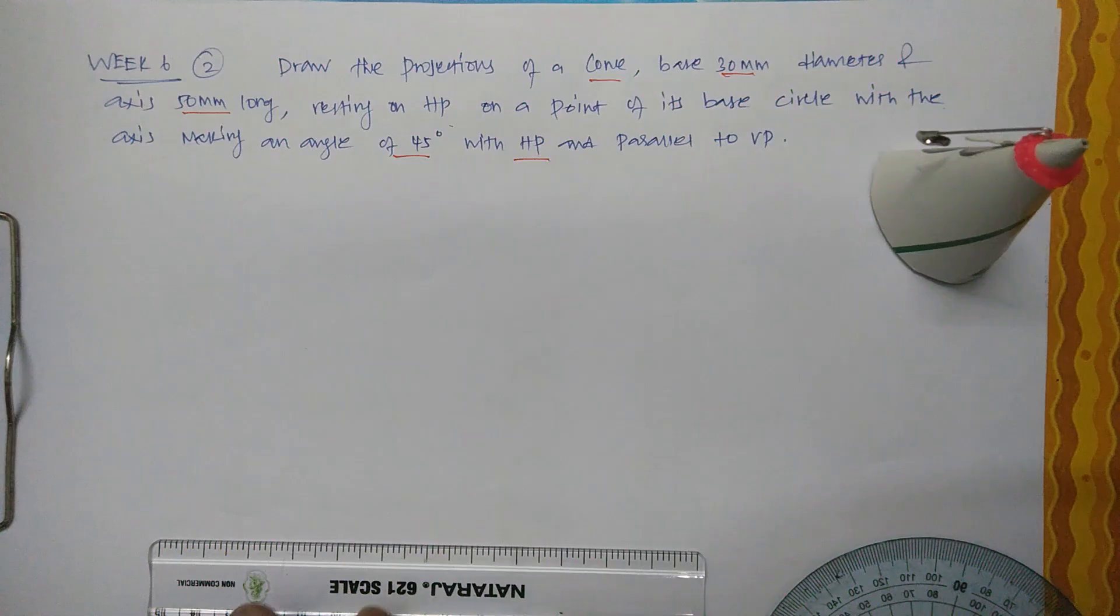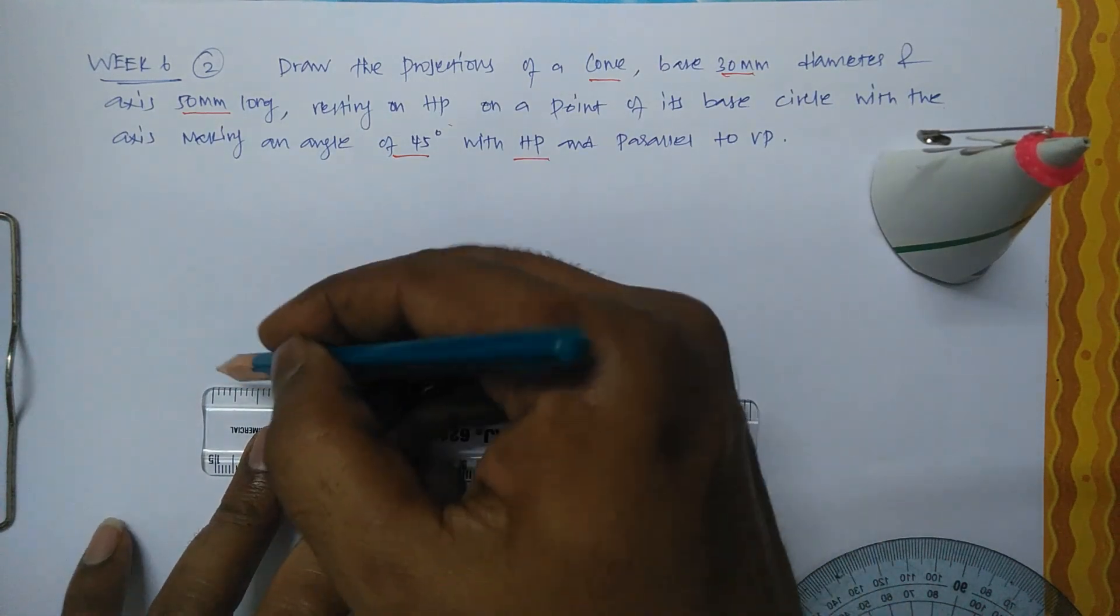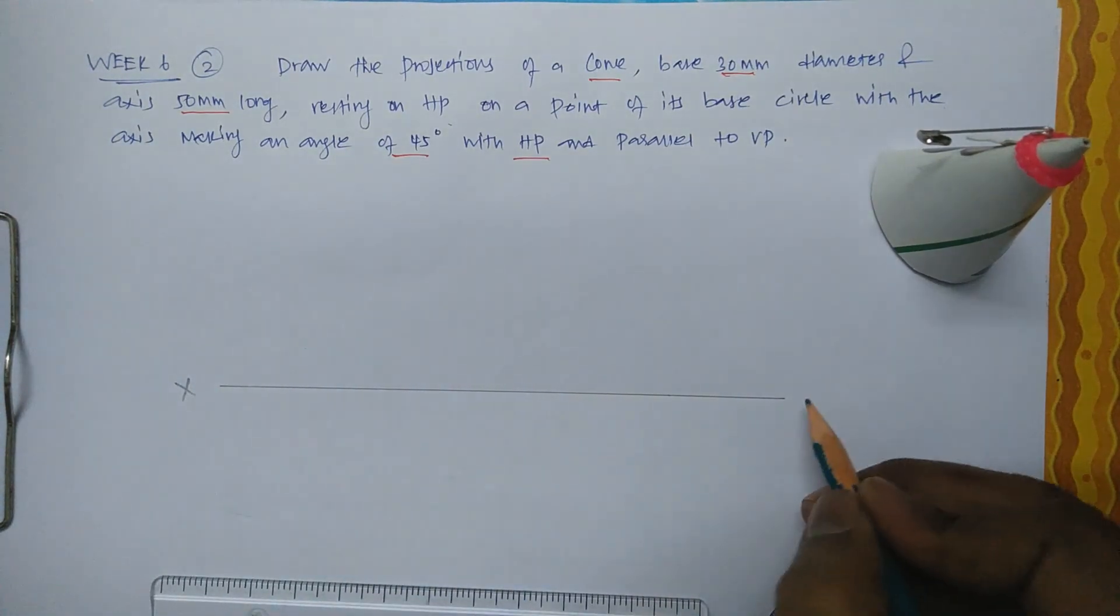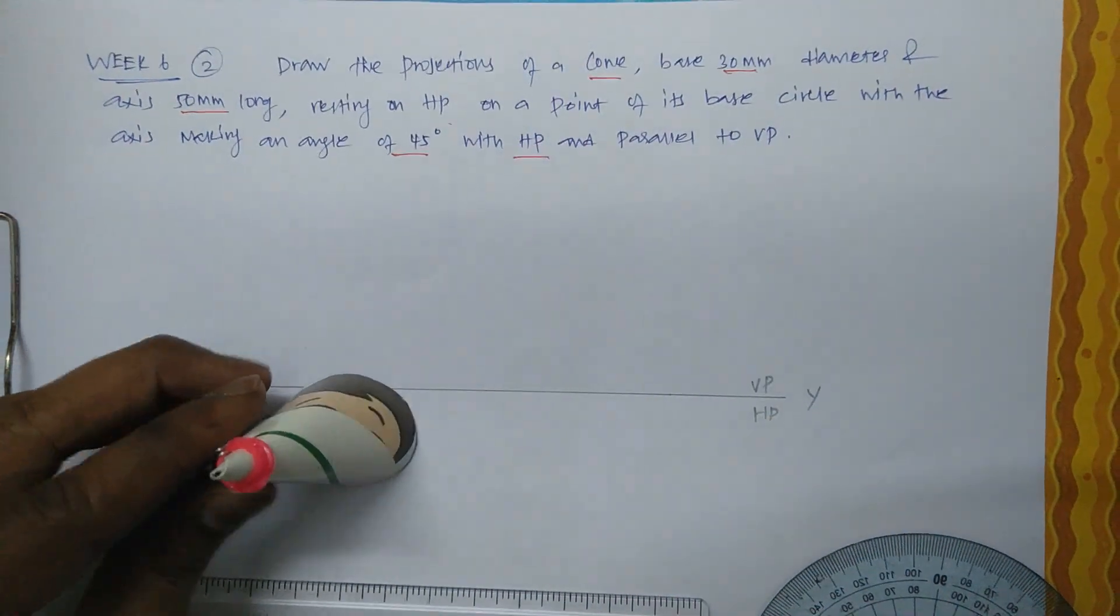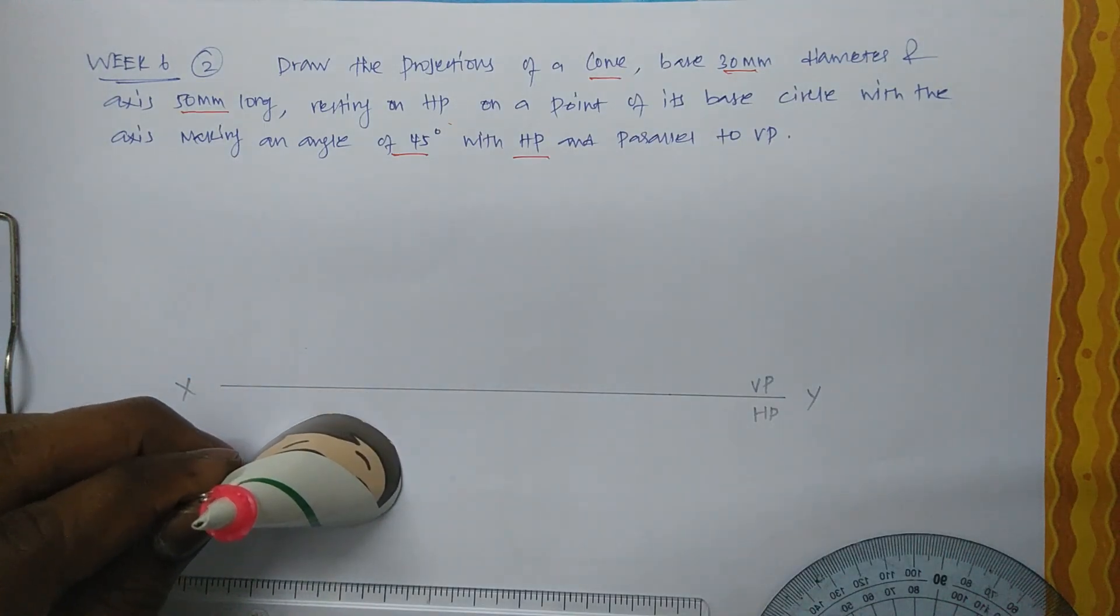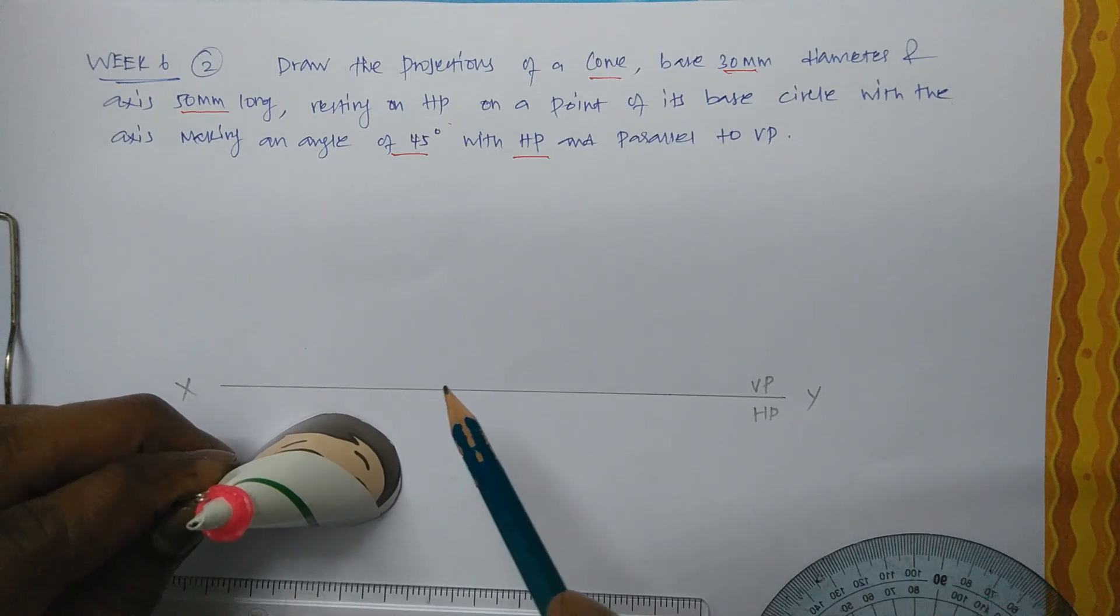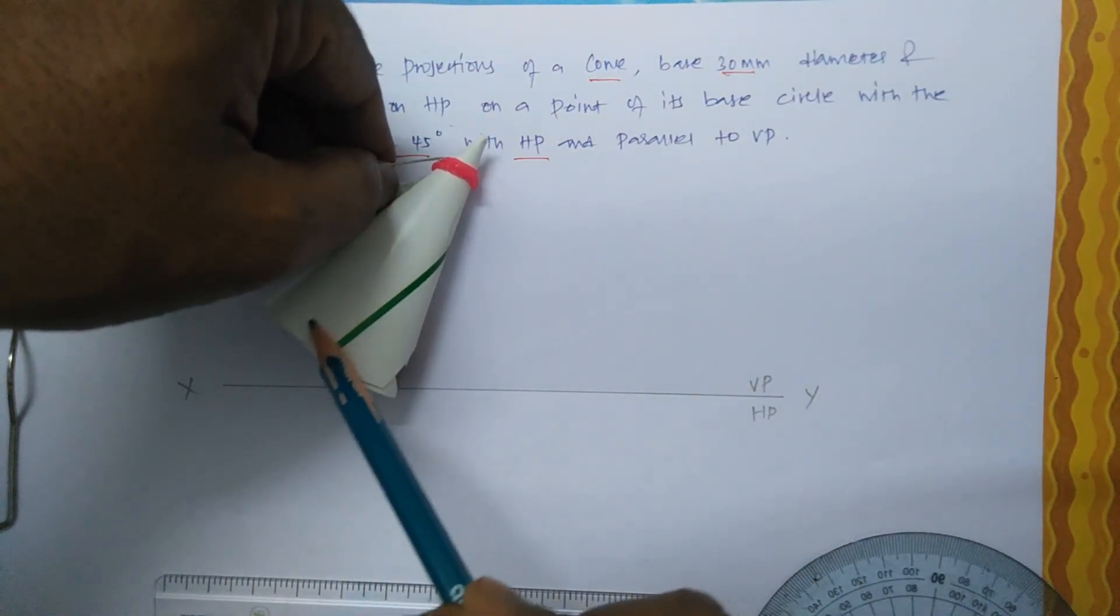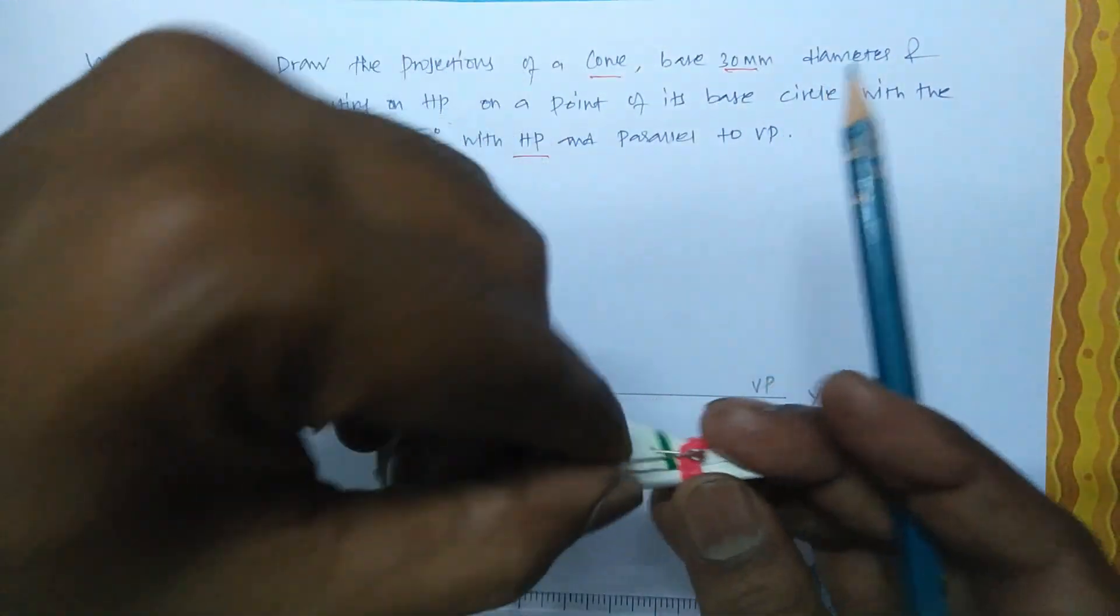So for this we're going to draw the axis first. Let it be XY, VP and HP. To draw the simple position, the cone is kept like this and you are seeing this direction. We will draw the cone as a right circular cone. This cone's axis makes 45 degrees with HP and is parallel to VP.